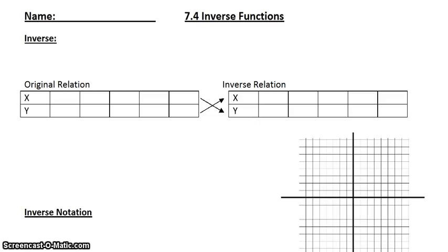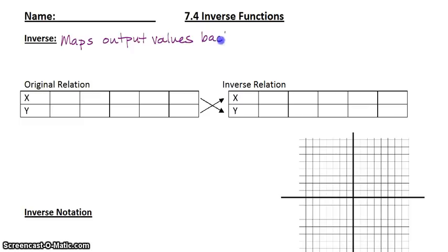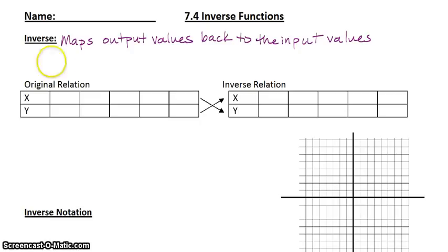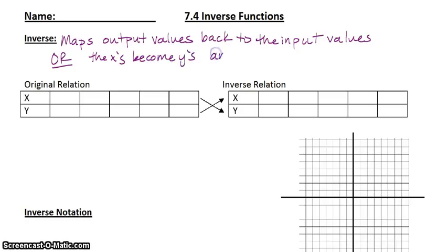You should know what an inverse is. The official definition is that it maps the output values — which are the y's — back to the input values. My unofficial definition is: the x's become the y's, and the y's become the x's. An inverse is where the x's and y's switch places.